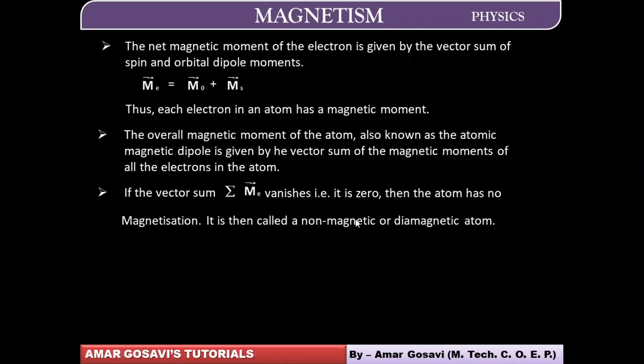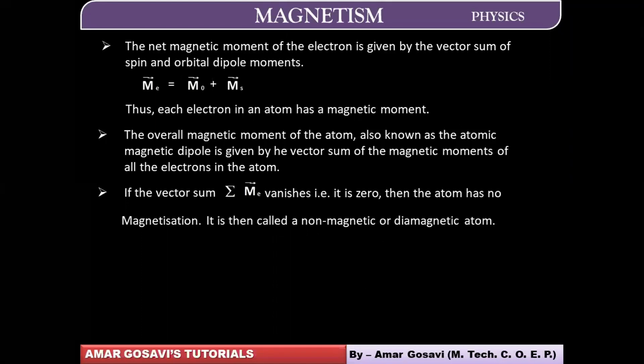In the universe, most things are diamagnetic. Very few materials contribute to magnetism. So most materials in the universe are diamagnetic.